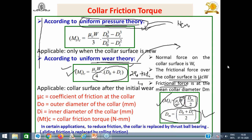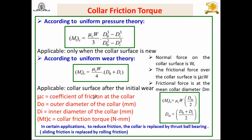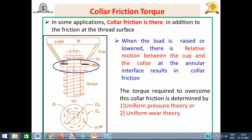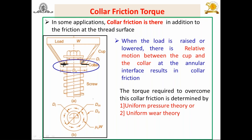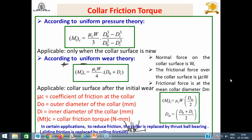In some screw jacks and power screws, instead of a collar, thrust ball bearings are used. When thrust ball bearings are used, the sliding friction between the collar and cup is replaced by rolling friction, and this rolling friction is very very small — essentially negligible. Therefore, when a thrust ball bearing replaces the collar, there is no need to consider the torque required to overcome collar friction.